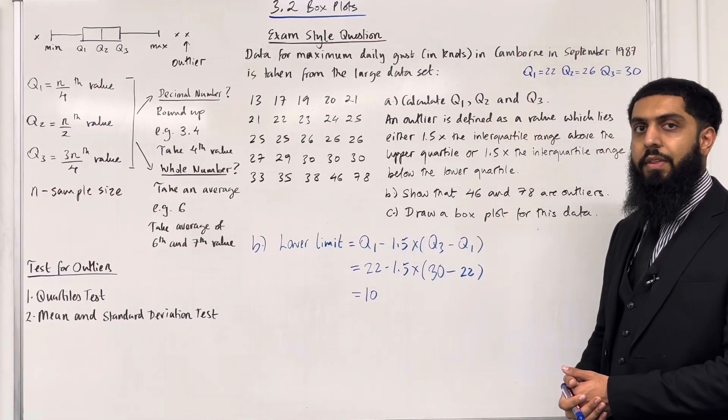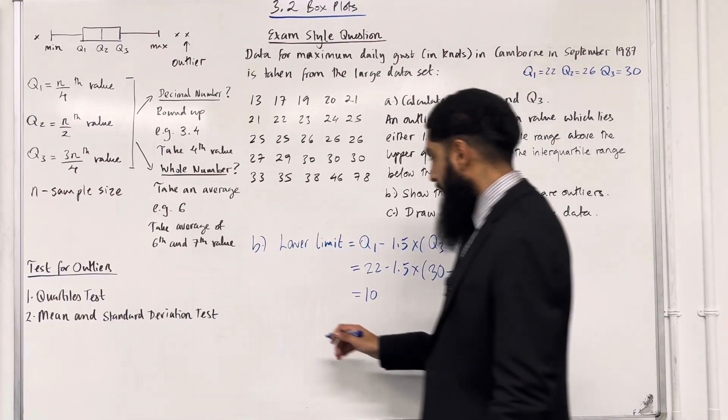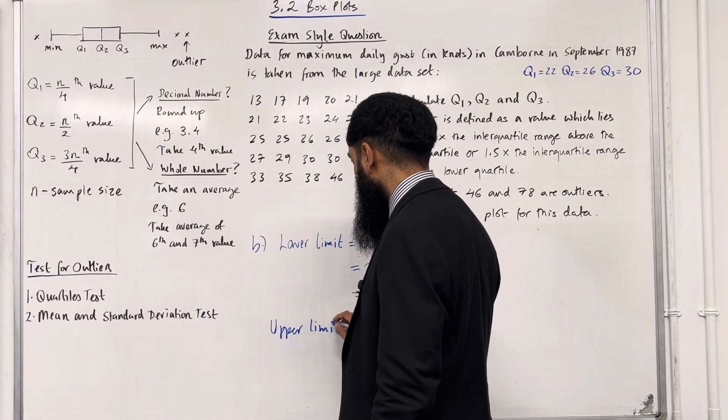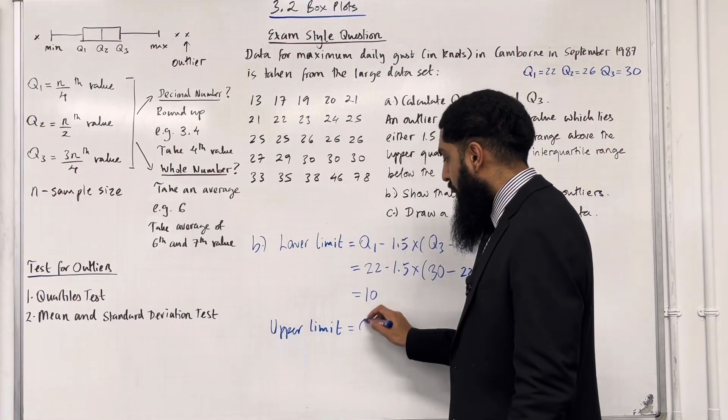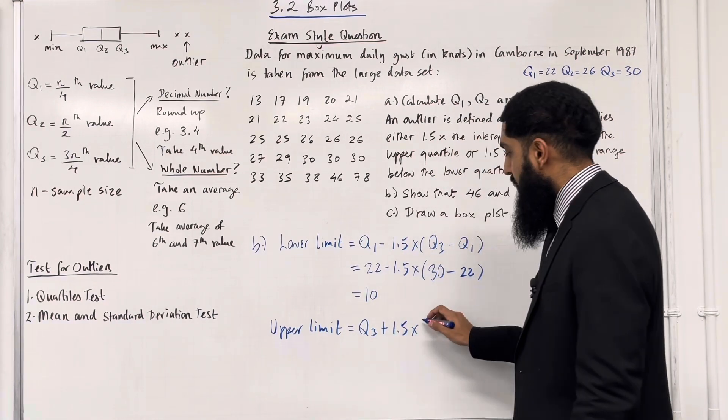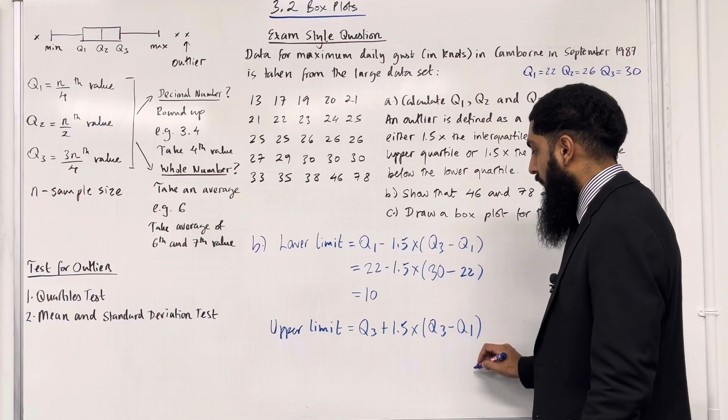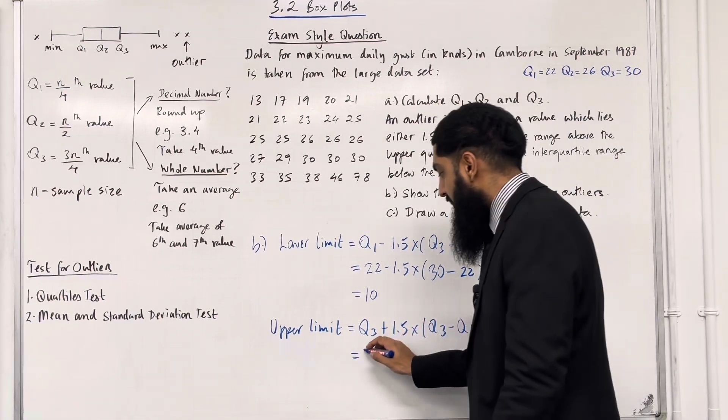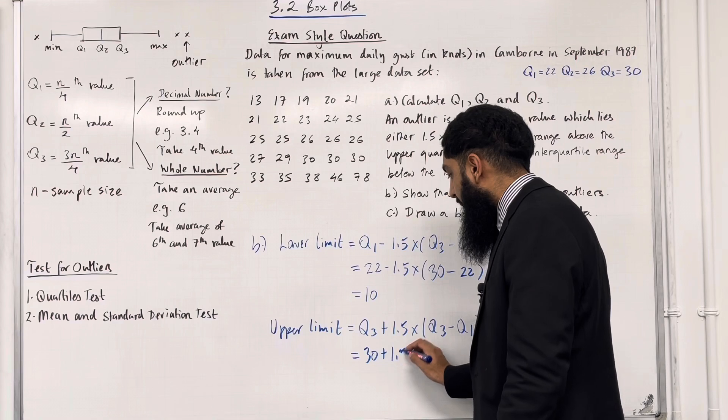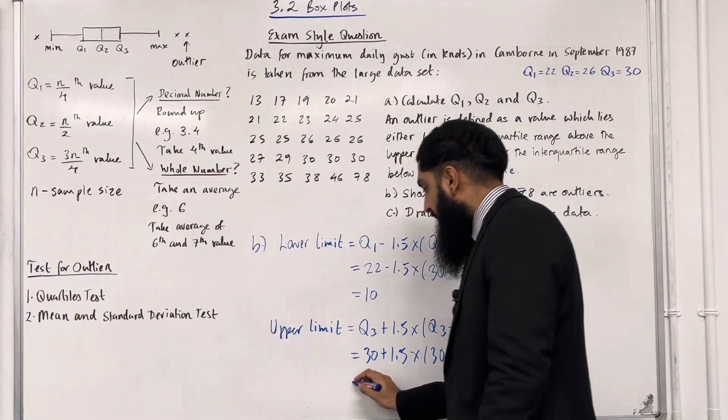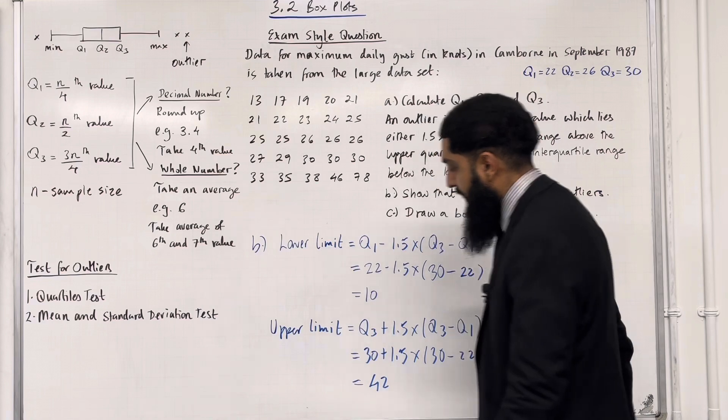Now I'm going to calculate the upper limit, which is given by Q3 plus 1.5 times the interquartile range (Q3 minus Q1). That's 30 plus 1.5 times (30 minus 22), which equals precisely 42.